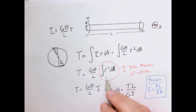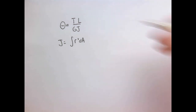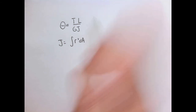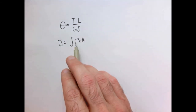This formula has a nice parallel with what we learned from tension. In tension, delta equals PL over EA. In torsion, the angle of twist equals TL over GJ. It rhymes: PL over EA, TL over GJ. Now let's figure out what J is for a circle.